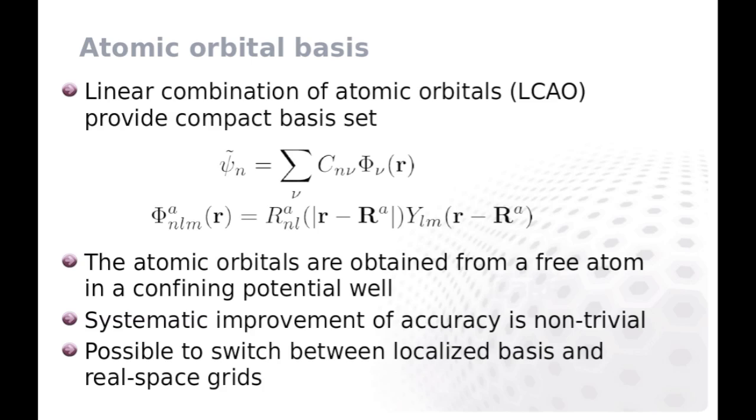As the number of basis functions is typically small, calculations can be very efficient. On the other hand, it can be difficult to converge the basis set in a systematic fashion. Adding just new basis functions does not necessarily improve the accuracy. In GPAW it is possible to switch between localized bases and the real-space grid within a calculation seamlessly.